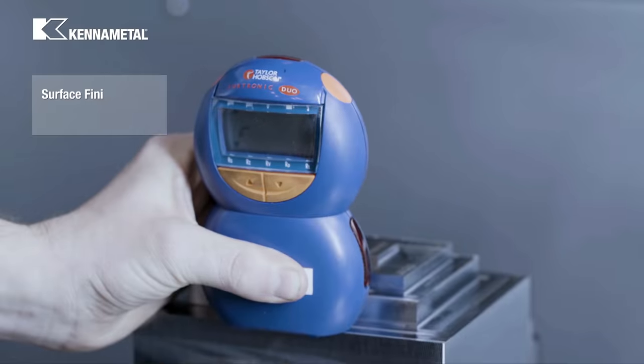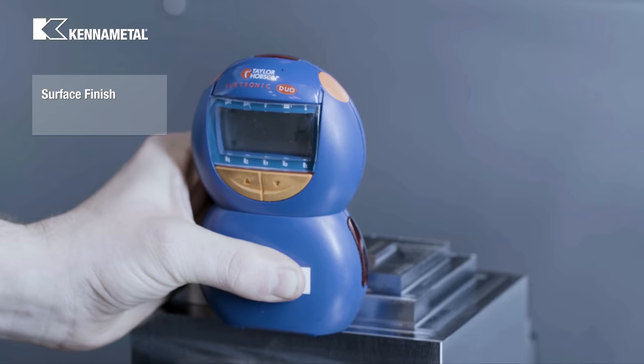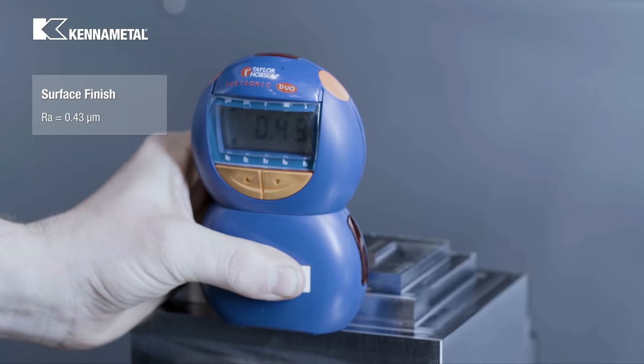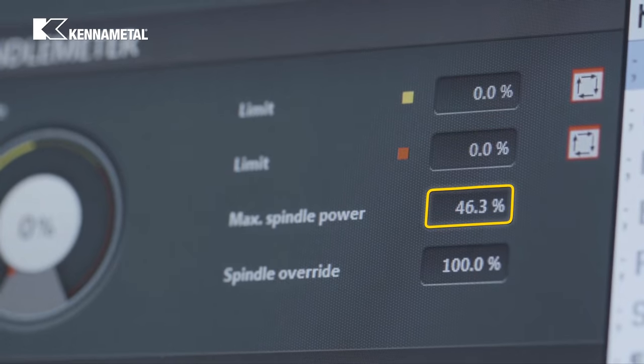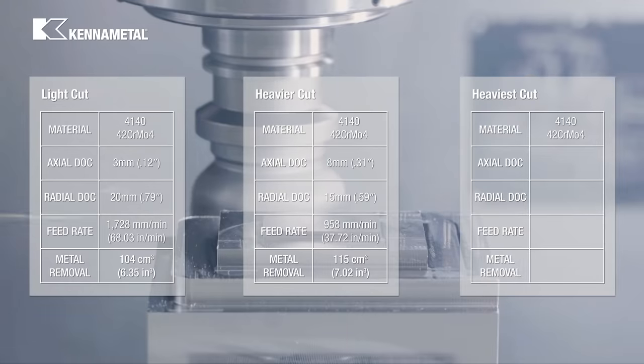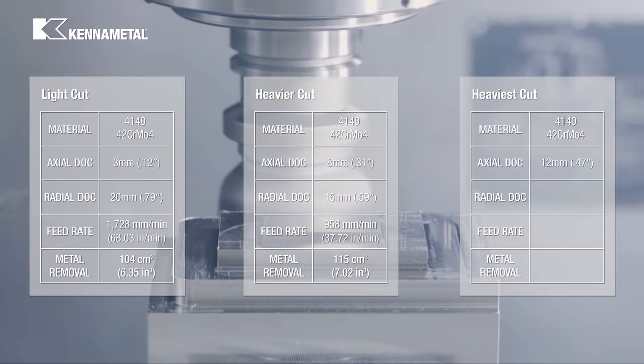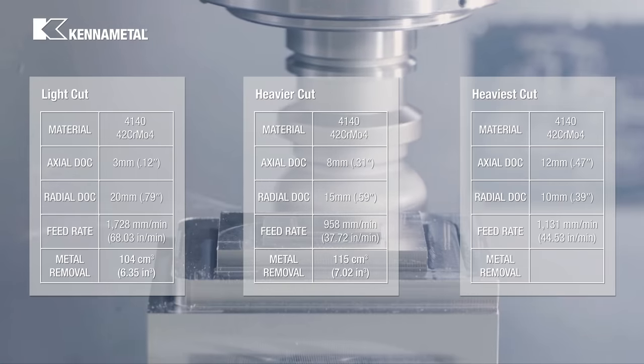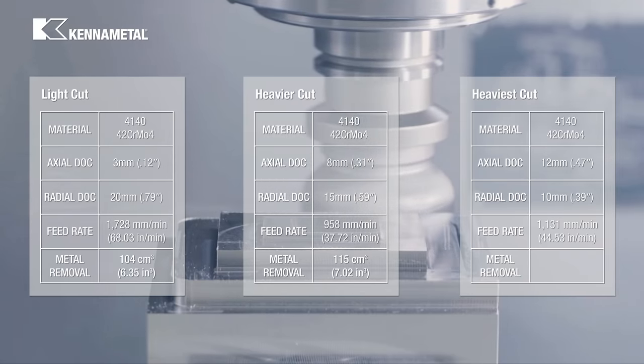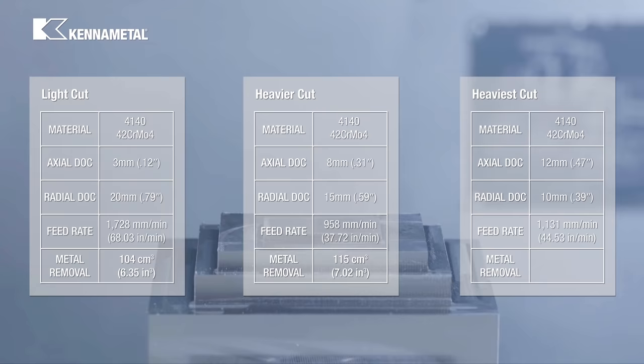Why don't we take another look at the surface finish again on the 12 millimeter cut. And a quick check on the spindle load—we're at 46 percent. With the maximum depth of cut of 12 millimeters, 10 millimeter radial depth of cut, and 1131 millimeters per minute feed rate, we achieved our highest metal removal rate of 136 cubic centimeters.